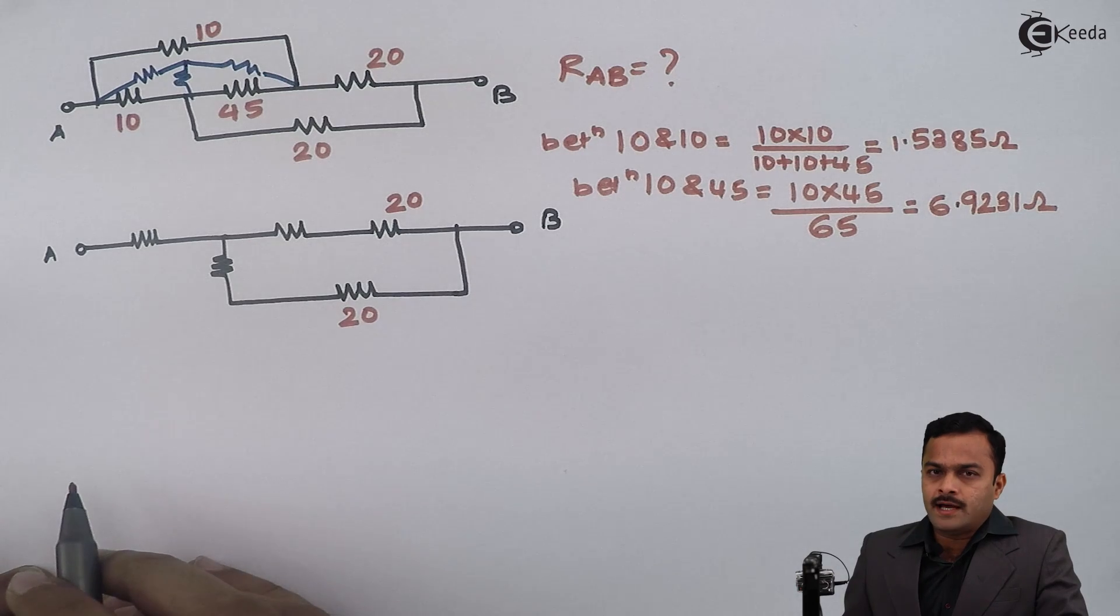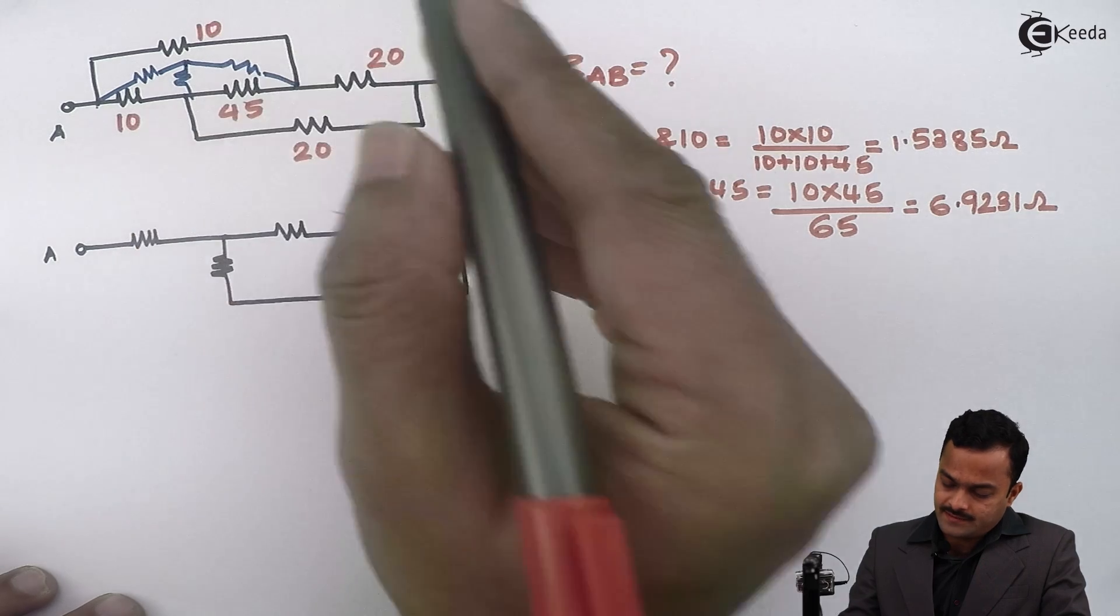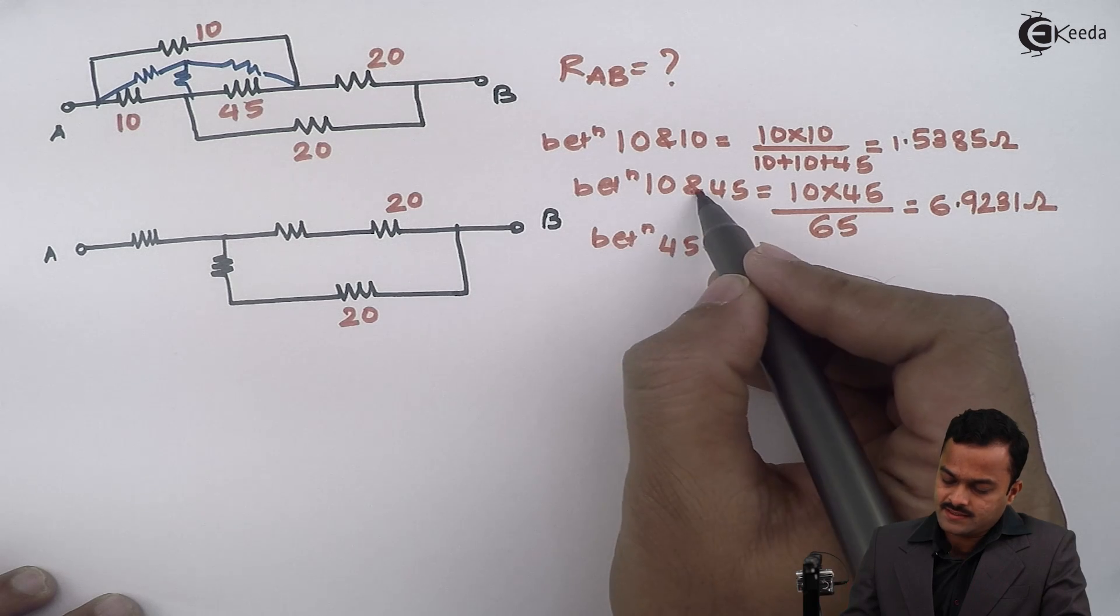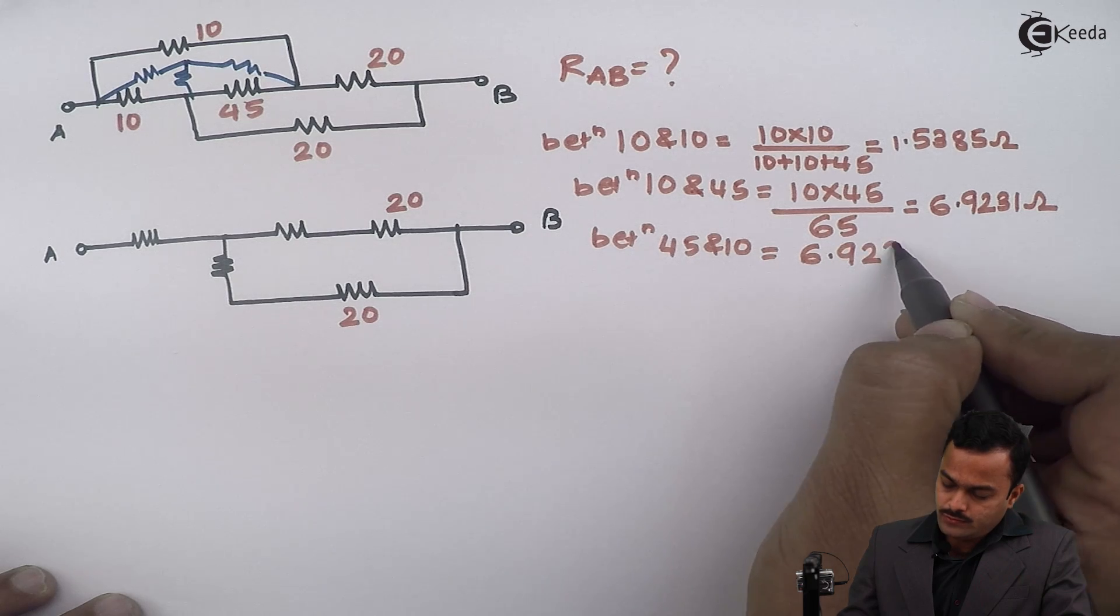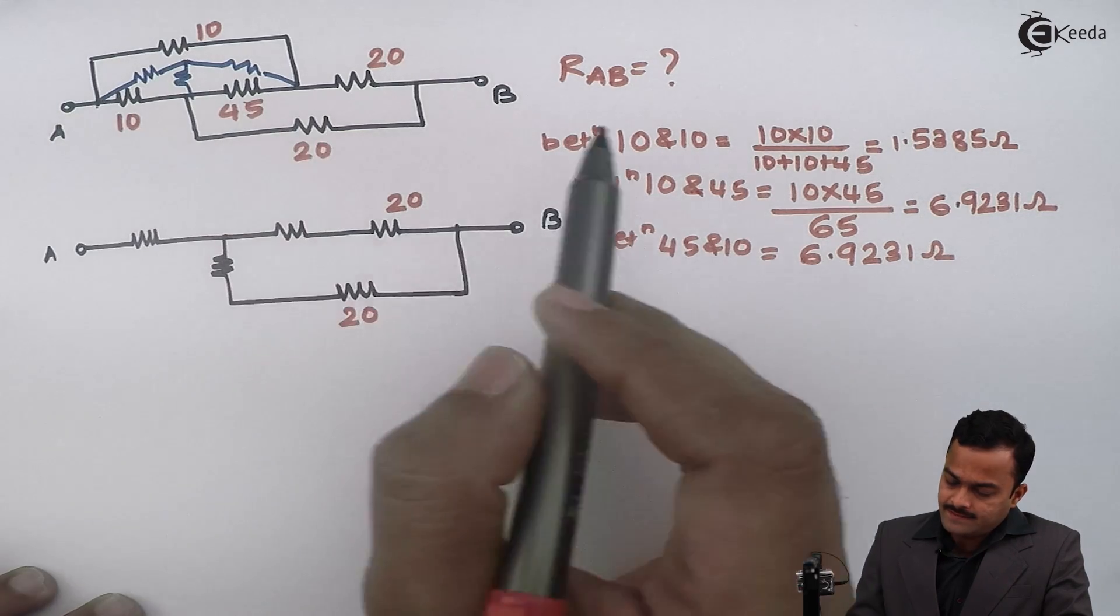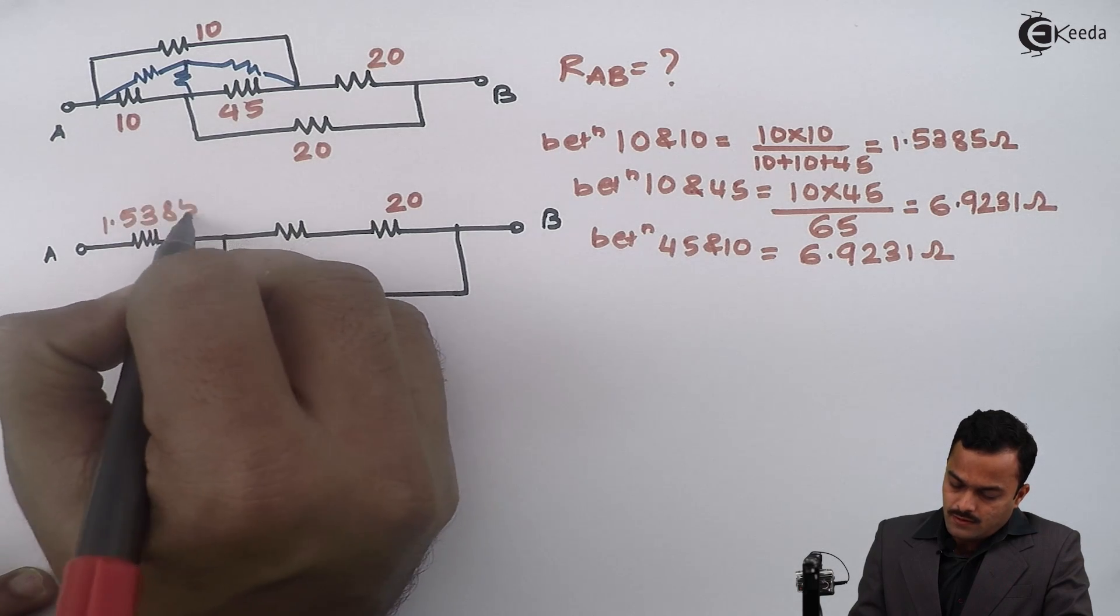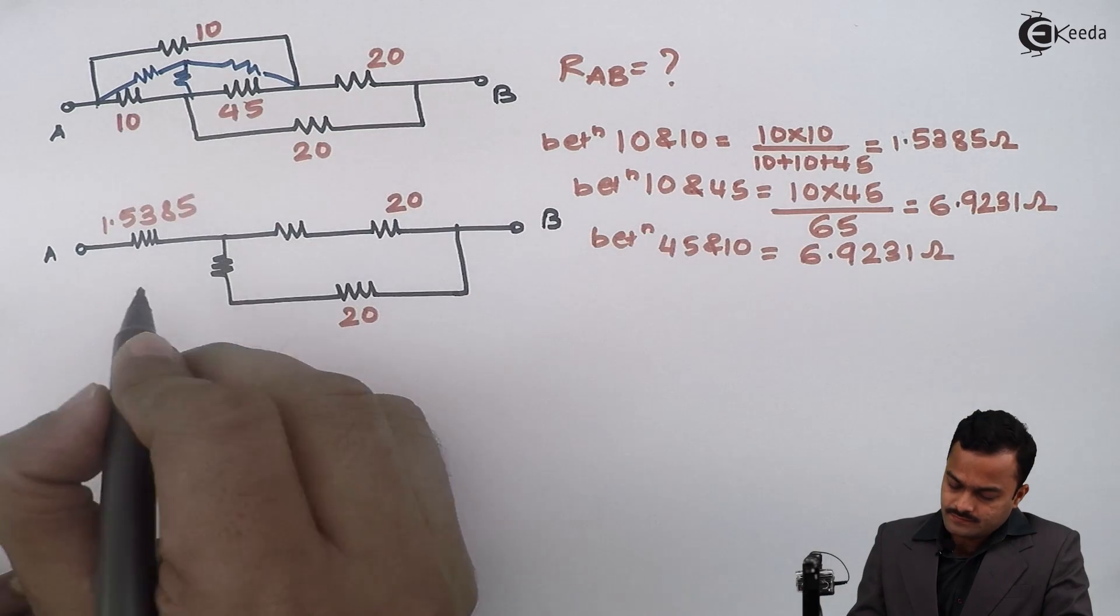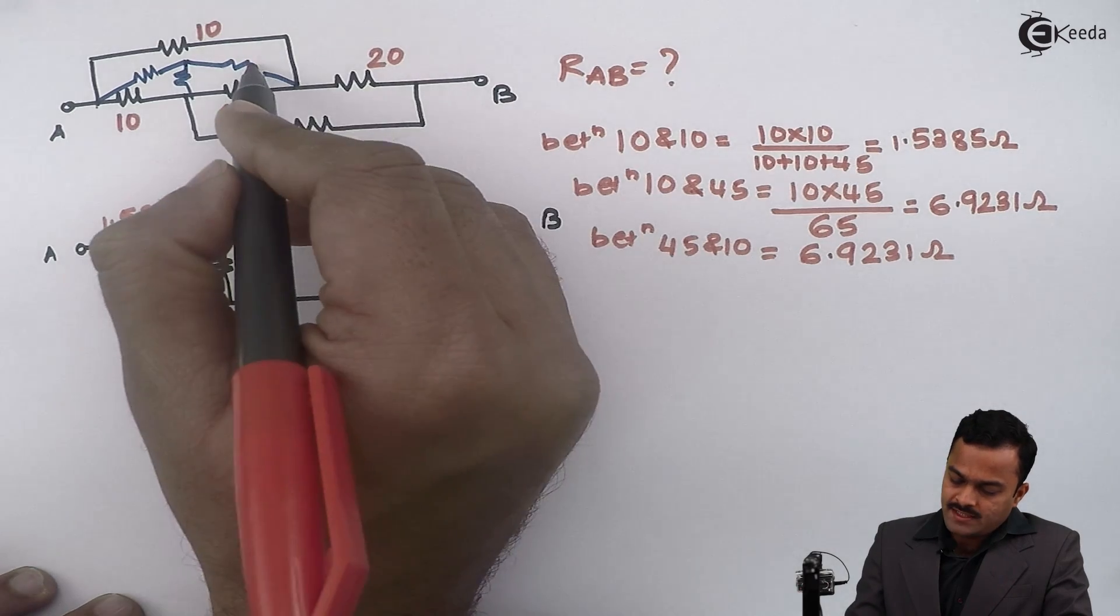answer as 6.9231. Similarly the third resistor is also between 45 and 10. Since this is same as this second resistor, I can say the value is 6.9231 ohm. So this resistor is between 10 and 10, answer is 1.5385. This resistor between 45 and 10 is 6.9231. This is between 45 and 10, once again it is 6.9231.